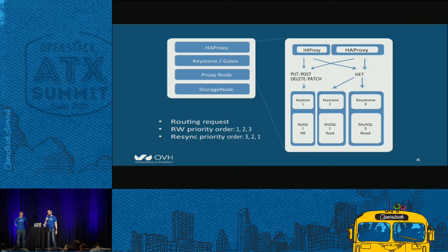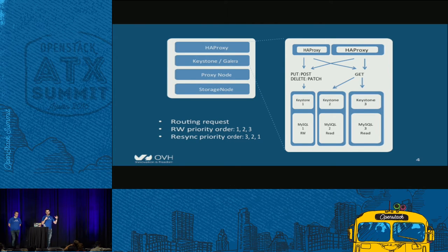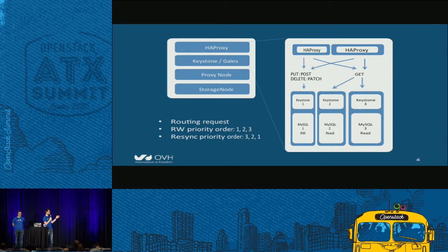This is a quick zoom on the relation between HAProxy and the Keystone-Galera cluster. As you can see, we route requests depending on their type. If it's a write request, we send it to one node; if it's a read request, we send it to the other node. The reason we do this is because when we didn't, we had many locks on the database — every write request was distributed to the different nodes and caused a lot of locking. With this routing algorithm, we don't have any locks. And this is a priority list, so if the first node is not available, HAProxy selects the second node, and so on.